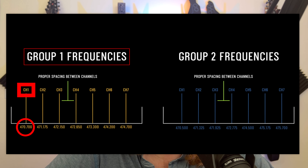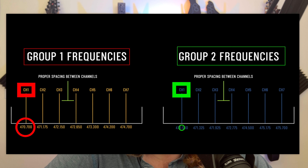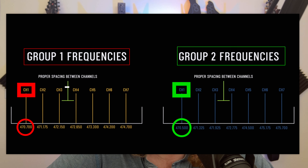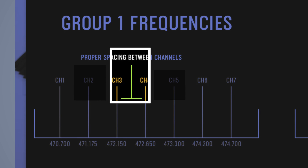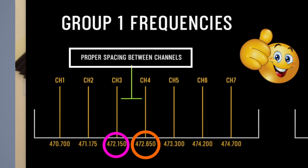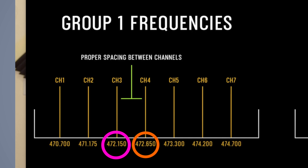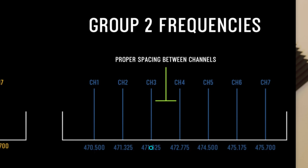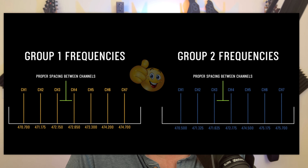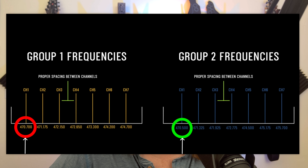Looking at this graph again: group one, channel one transmits on 470.700 megahertz. Group two, channel one transmits on 470.500 megahertz — those are pretty close but different numbers. What this graph shows is the proper spacing between channels. For example, in group one, channel three is on 472.150 megahertz and channel four is on 472.650 megahertz, so there is a 0.500 megahertz spacing between those two. Shure knows their products and they know that is enough space between frequencies that they won't interfere with each other.